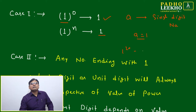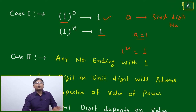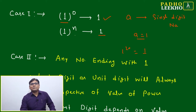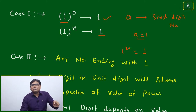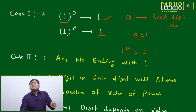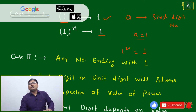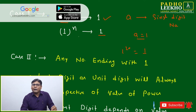One to the power 20 is 1. One to the power any number is always 1. One to the power zero is also 1. That is the peculiar property of one — whether you raise it to zero or any non-zero positive integer, it always gives you one.